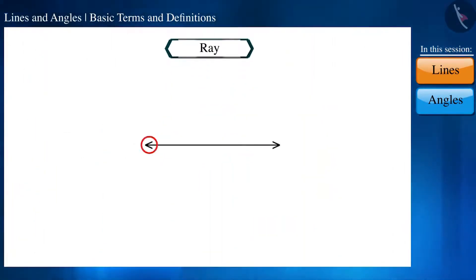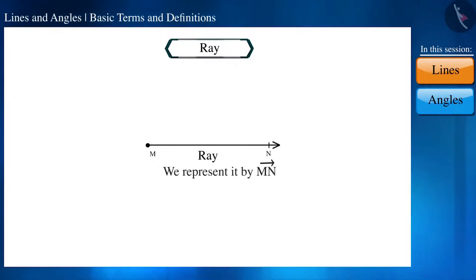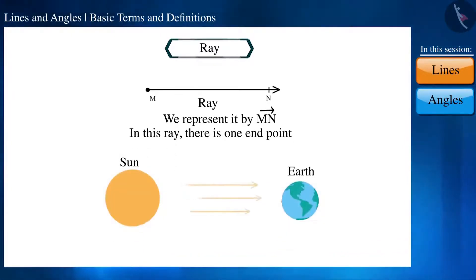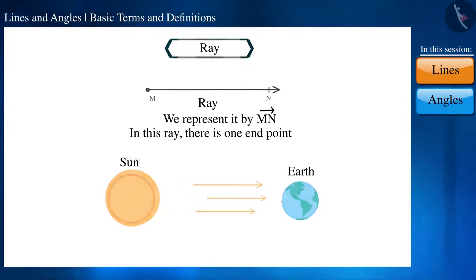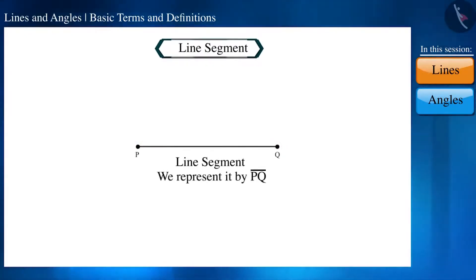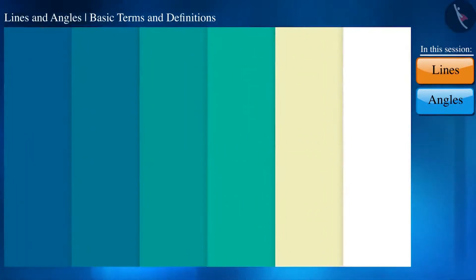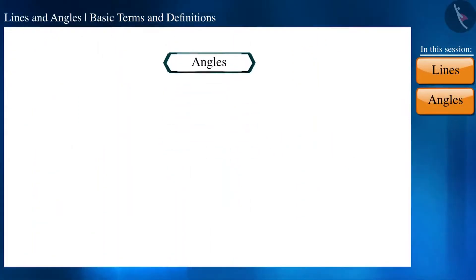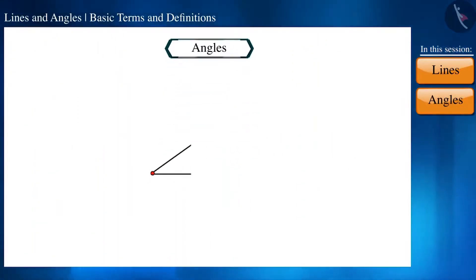Now, if we represent one end of a line by a point, we will not call it a line but a ray. We call the light coming from the Sun a ray because the source of origin is fixed. If we represent both ends by points, it becomes a line segment.